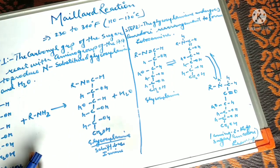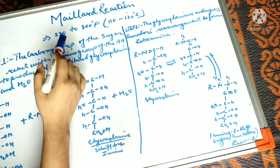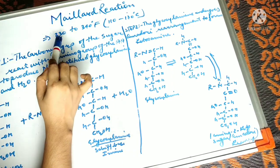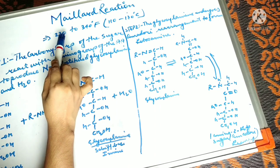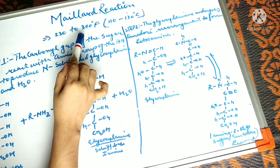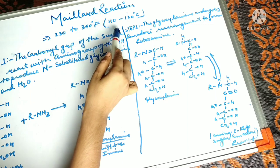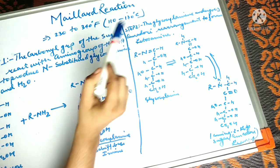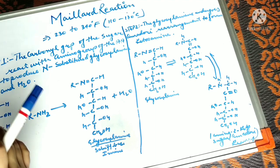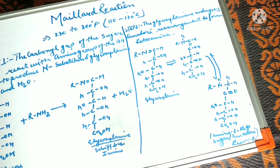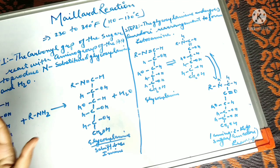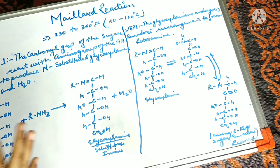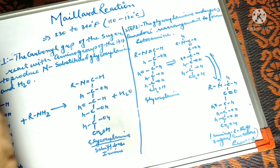For the initiation of the Maillard reaction, the temperature is cited as 230 to 340 degrees Fahrenheit, or 110 to 170 degrees Celsius. There are basically four steps involved in the Maillard reaction. Let us learn all four steps one by one.